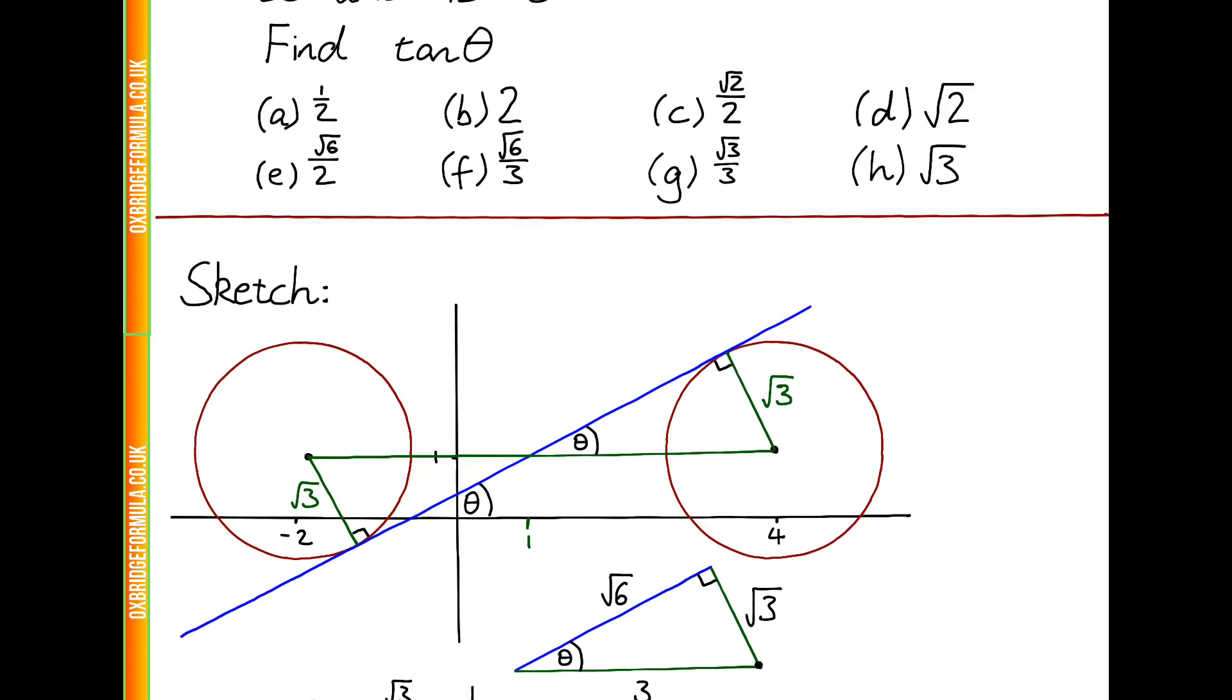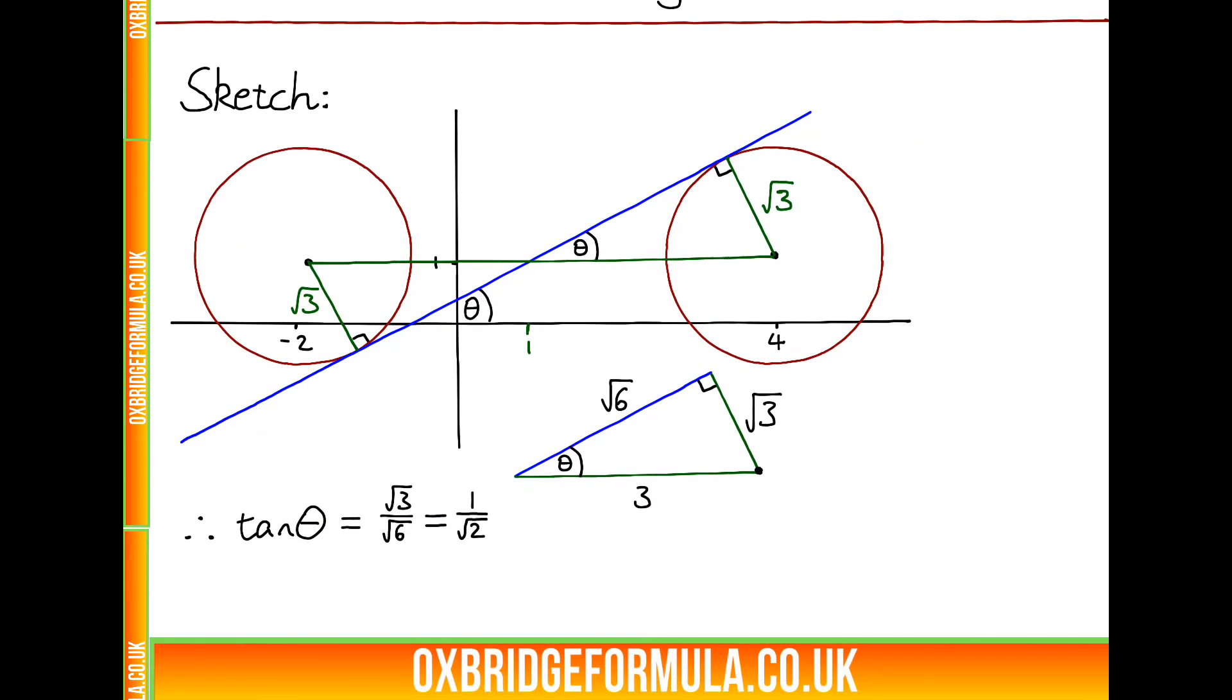Now, if we look at our options, 1 divided by square root 2 isn't one of these options. However, option C is square root 2 over 2, and if we multiply the top and the bottom of this fraction by square root of 2, we can see that we get root 2 over 2, which is exactly option C. So, our answer is option C.